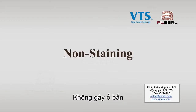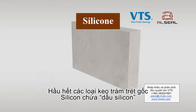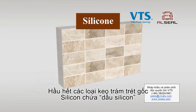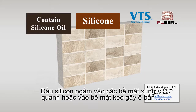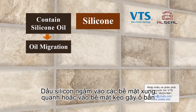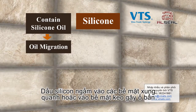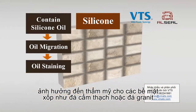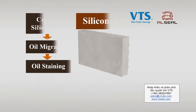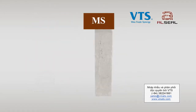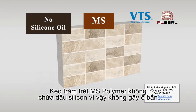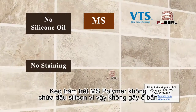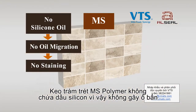Non-staining. Most silicone sealants contain silicone oil, which will migrate into adjacent substrates or onto the sealant surface, causing oil staining and aesthetic issues on porous substrates like marble or granite. MS Polymer Sealant does not contain silicone oil, hence there will be no staining caused by silicone oil migration.